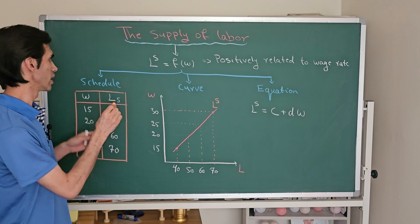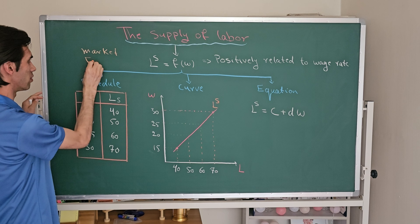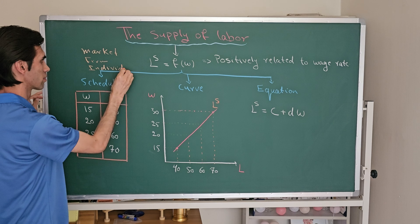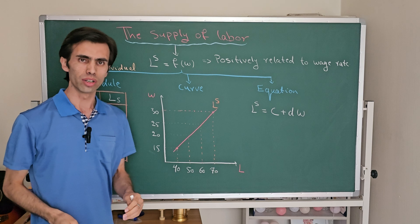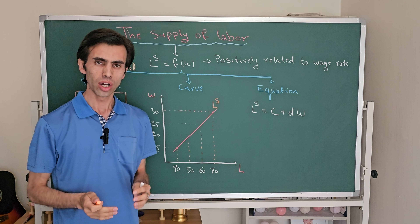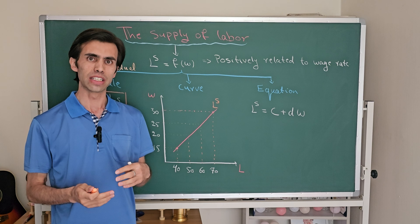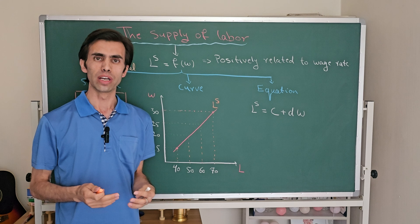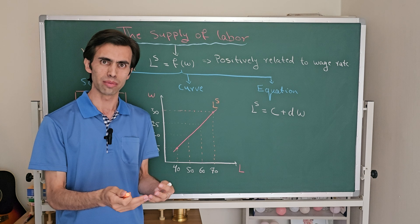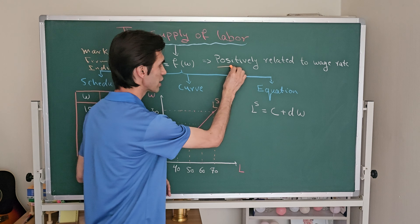We need to understand labor supply at three levels. The first is the market level, the second is the firm level, and the third is the individual level. In this video, I will briefly talk about labor supply within the industry or market level overall. When we keep other factors — such as wages in substitute jobs, value for leisure, and entry level to the labor market — fixed...